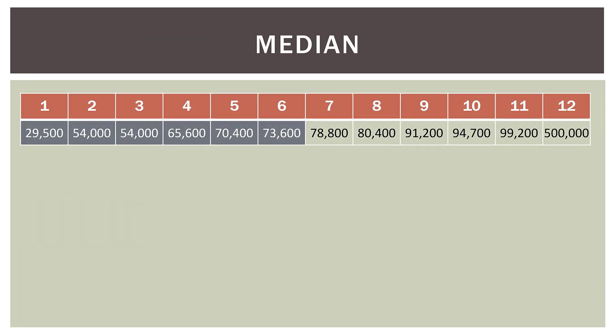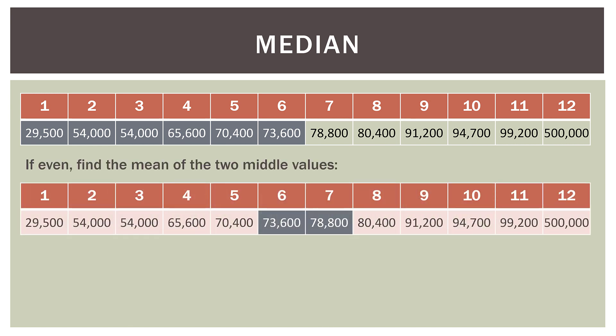So let's start with something we already know, the median. So remember the median is just the center of a data set once you line them all up in order. So here we have 12 observations. Therefore to find the median is the middle two values. So the median of this data set, which we've used in many videos before, or its salary data is 73,600. That's the sixth observation plus 78,800, the seventh observation divided by two. And our median is 76,200.